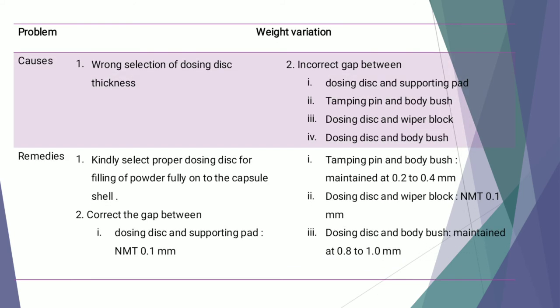The next problem is weight variation. This may occur because of wrong selection of dosing disc thickness and incorrect gaps between: dosing disc and supporting pad, tempering pin and body bush, dosing disc and wiper block, and dosing disc and body bush. Remedies include selecting the proper dosing disc, correcting the gap between dosing disc and supporting pad to not more than 0.1 mm, maintaining the tempering pin and body bush gap at 0.2 to 0.4 mm, dosing disc and wiper pin gap not more than 0.1 mm, and dosing disc and body bush gap at 0.8 to 1 mm.